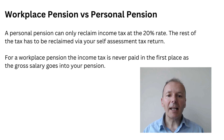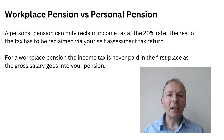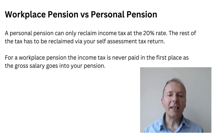To reclaim the remaining tax above 20% you need to claim it via a self-assessment tax return, and it will be paid into your bank account rather than your pension. With a workplace pension, the income tax is never paid by you — the money goes gross straight into the pension — so that is the best route.